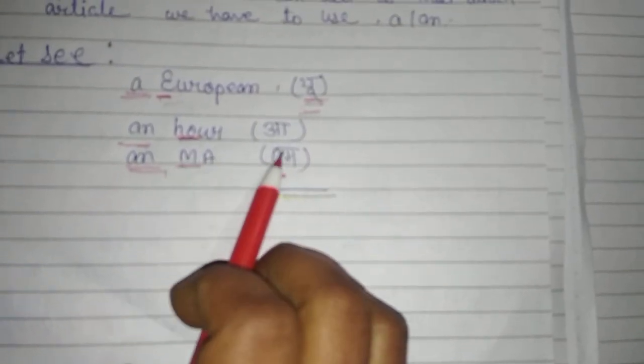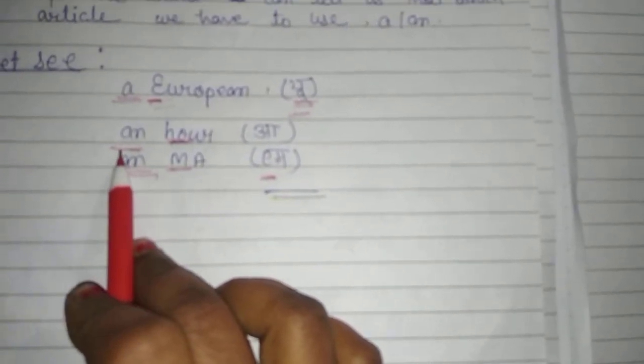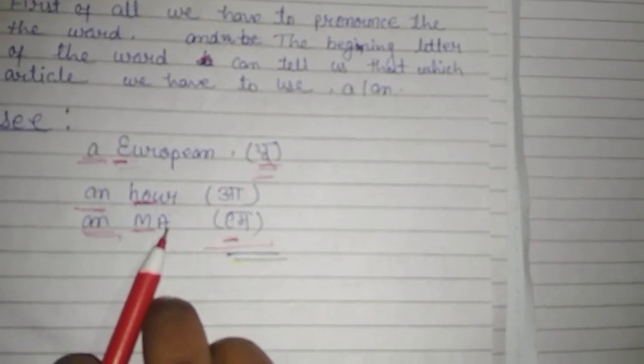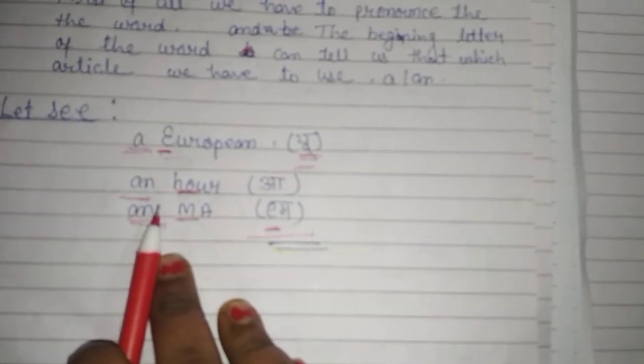And another example: 'an hour'. Here is 'H', a consonant letter, but it is giving a vowel sound 'o'. So we use 'an' before this word. Okay, I hope you will enjoy and understand this video on articles. Thank you.